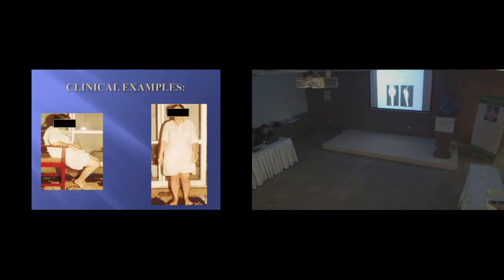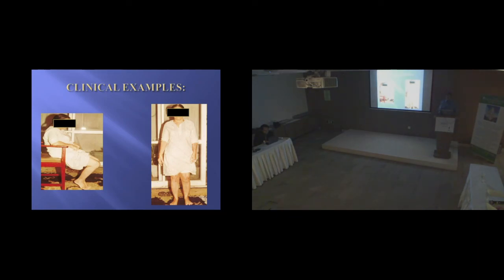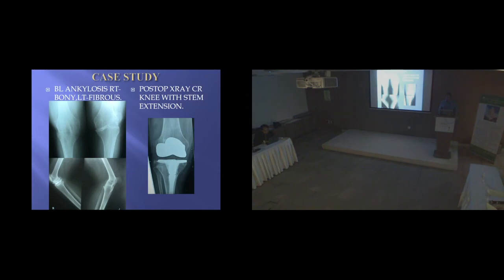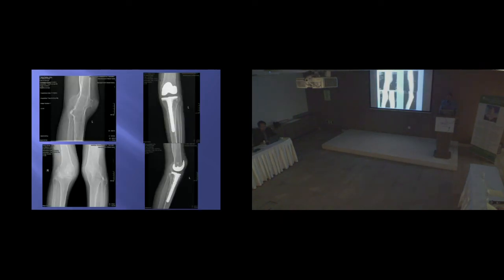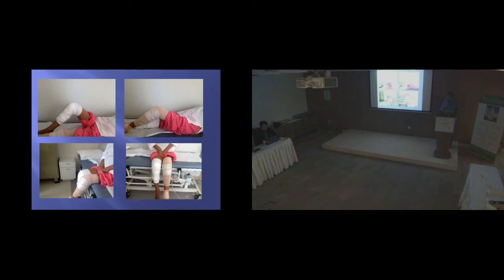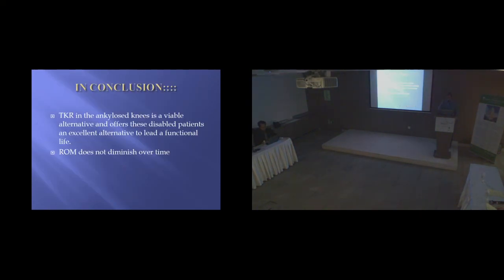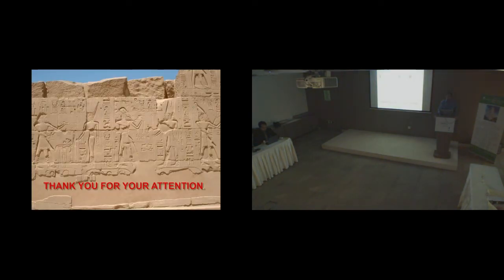Examples include a knee ankylosed at about 60 degrees of flexion — shown pre-op and post-op using a CR implant — with almost 17 years of follow-up. Another case shows bony ankylosis in flexion treated with a primary knee with stem extension. A case of extension bony ankylosis in a rheumatoid patient was treated with primary implants with good results, with immediate post-op X-rays shown. In conclusion, TKR in the ankylosed knee is a viable alternative and offers these very disabled patients an excellent option.